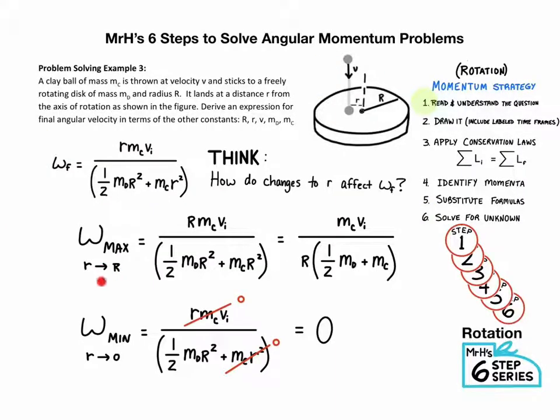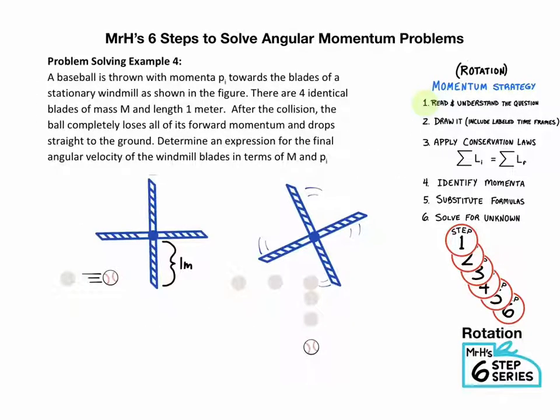So if we approached the distance capital R, that's the edge of the disc, that would be like this little r turned into big R, and so did this one. And then we end up with this expression kind of as a maximum, because we can't get further out than that. But if we went the other way and we approached zero with little r, notice the numerator goes to zero, and that's the smallest amount of angular velocity you could have. All right, one more question.